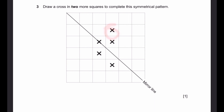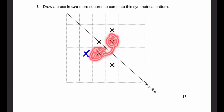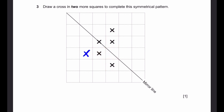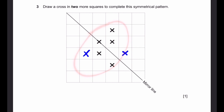Now for this cross, the mirror image will appear over here, so we have to draw the cross there. Now this cross, the mirror image is already here, so these two don't need to be drawn again. And as for the last one down here, if we take the mirror image of that, it'll be over here, in this square. So we draw a cross there. Once we're done with drawing these two crosses, this figure is symmetrical along this line. That's our answer.